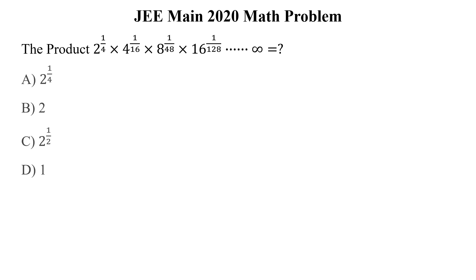How can we solve it? We can simplify it and we can write 2 to the power 1 by 4 multiplied by 2 squared to the power 1 by 16 multiplied by 2 cubed to the power 1 by 48 multiplied by 2 to the power 4, whole power 1 over 128, up to infinity.